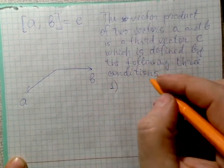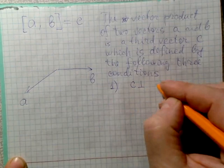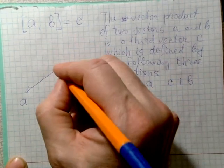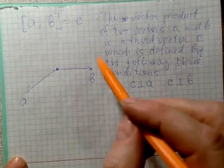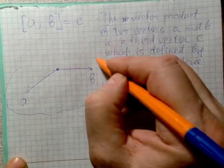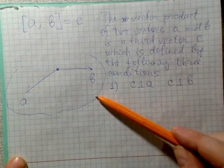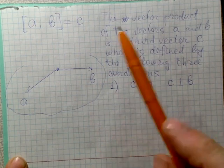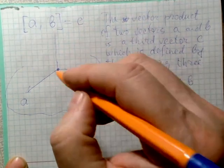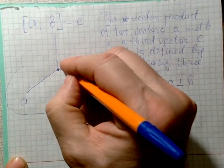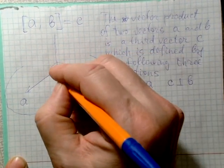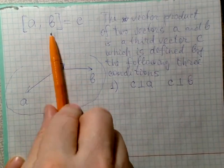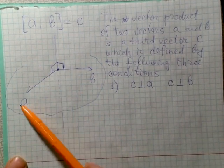The first condition says that the vector c is perpendicular to the vector a and c is perpendicular to the vector b, so this third vector should be perpendicular to both of them. If we draw the plane of these two vectors, then the third vector c should be perpendicular to that plane, since it is simultaneously perpendicular to both a and b.